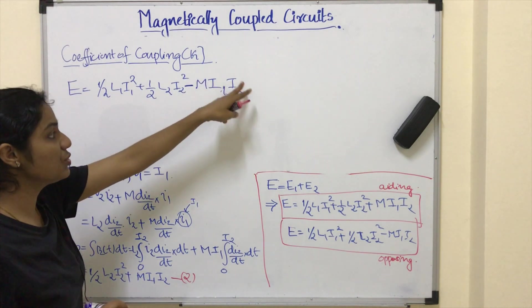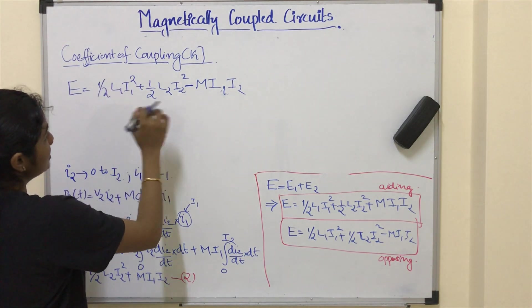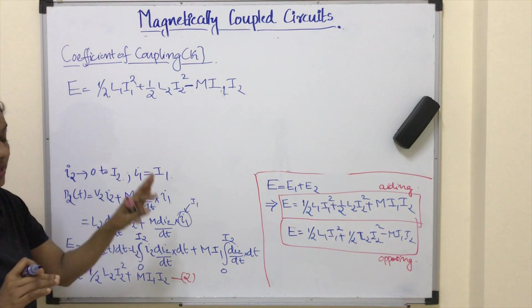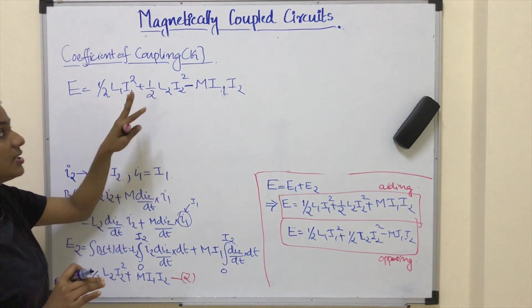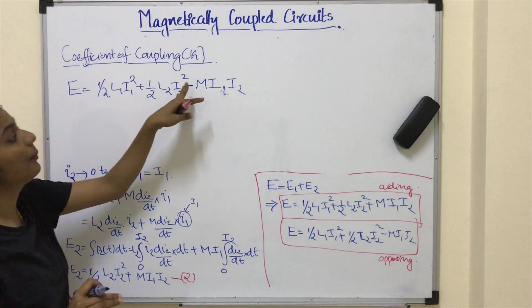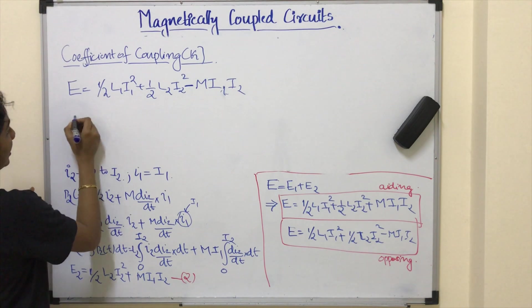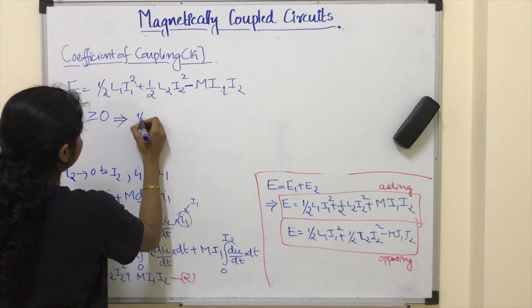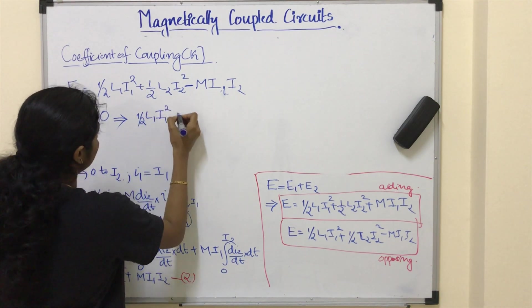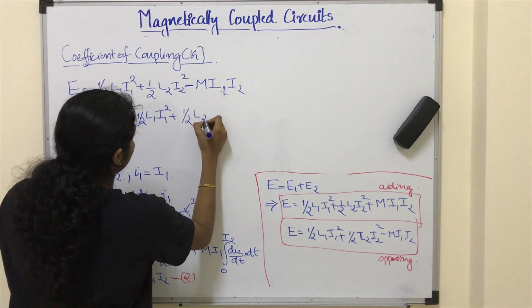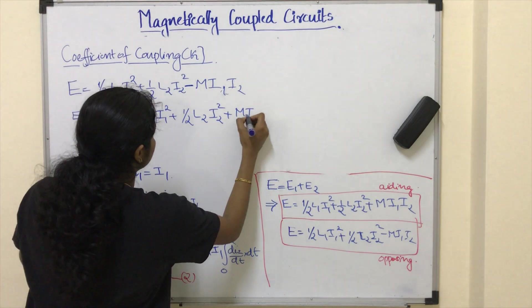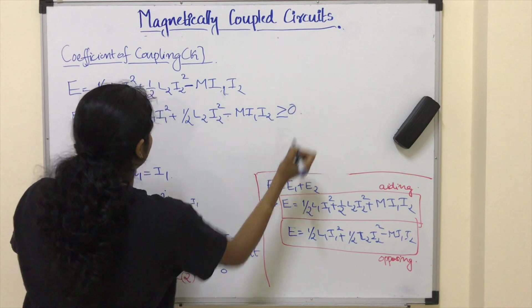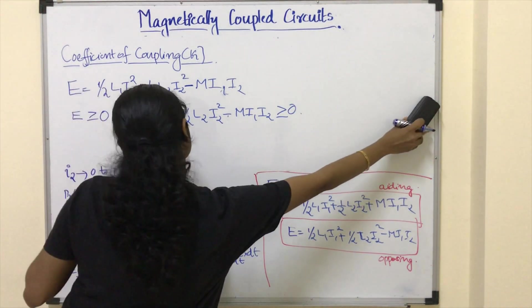In the aiding case this term is already positive, so the whole expression is always positive. But in the opposing case, if M·I1·I2 is large, the energy could become negative. Since this is a passive circuit, the energy stored must be positive, so E must be ≥ 0: half L1 I1 squared plus half L2 I2 squared minus M·I1·I2 ≥ 0.